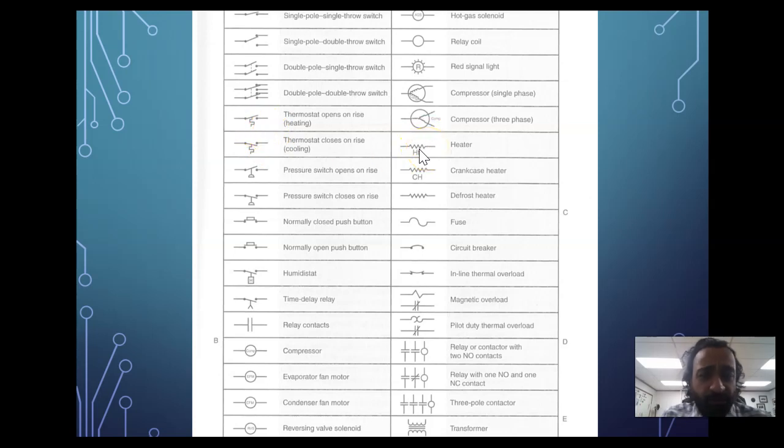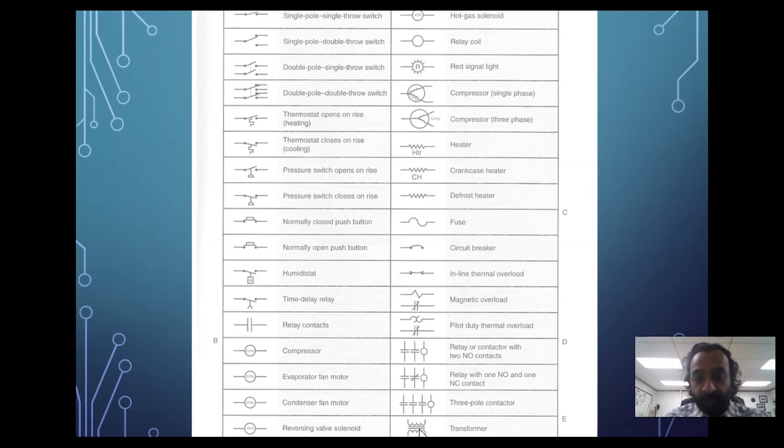Some symbols like thermostats are usually the same—they don't change much. This usually symbolizes resistance; this could be for a motor, but I've seen another one for motors. LEDs, fuses, relay switches—I will emphasize relays and contactors are very important because we always have controls with low voltage and high voltage. This is a transformer—what does it do? It steps up or steps down the voltage.